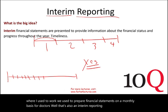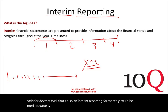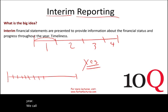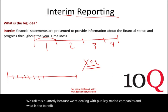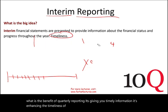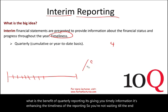Monthly could be interim, quarterly, weekly — it doesn't matter. It's any period less than a year. We call it quarterly because we're dealing with publicly traded companies. The benefit of quarterly reporting is that it gives you timely information — it enhances the timeliness of reporting, so you're not waiting till the end of the year to find out what's going on.